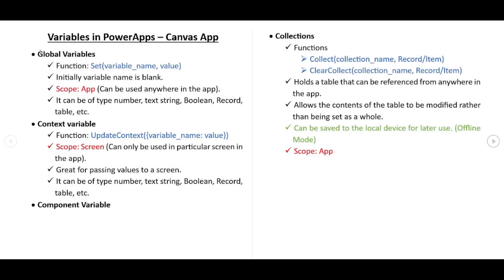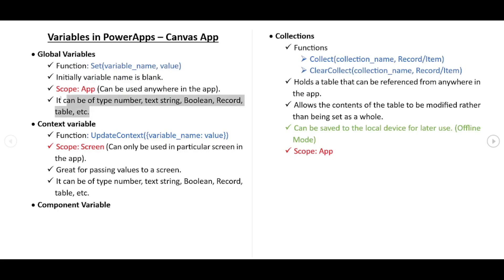Now let's talk about variables in Power Apps or Canvas App. We have four types: the first is global variable, the second is context variable, the third is component variable, and the fourth is collections. Global variable means it can be used anywhere in the app — its scope is the whole app. The function for it is 'Set'. We use Set with two parameters: the variable name and the value, which can be of type number, string, boolean, record, or table.